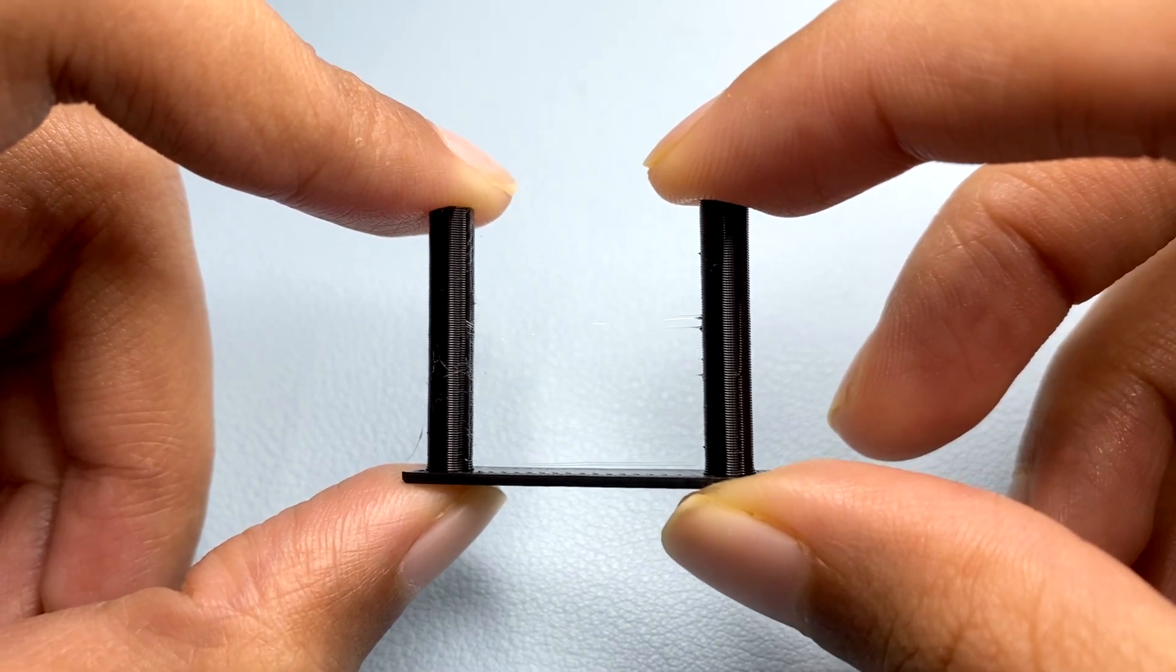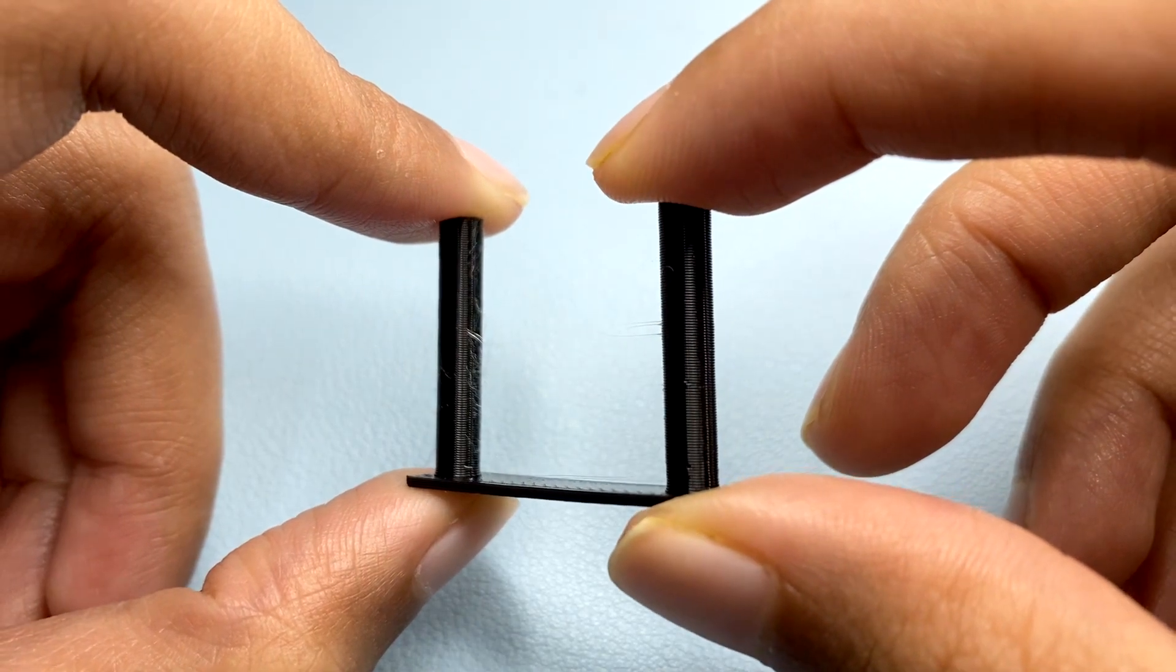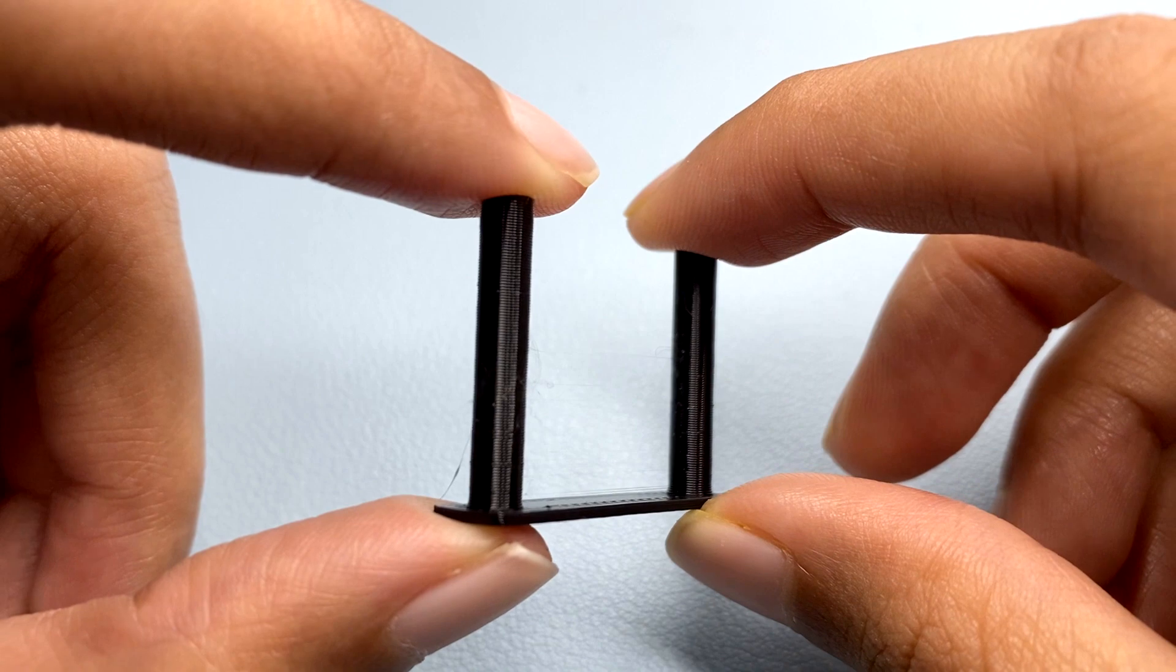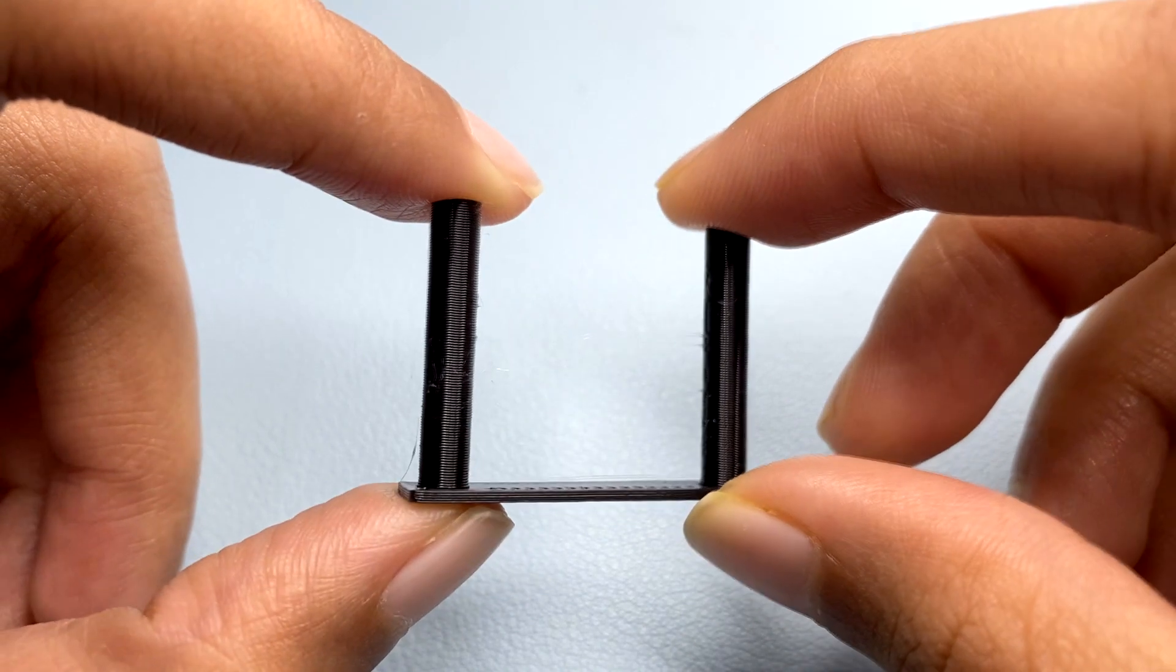With this test, I can conclude that the nozzle temperature plays a huge role in ensuring the reduction of stringing apart from retraction distance and speed.